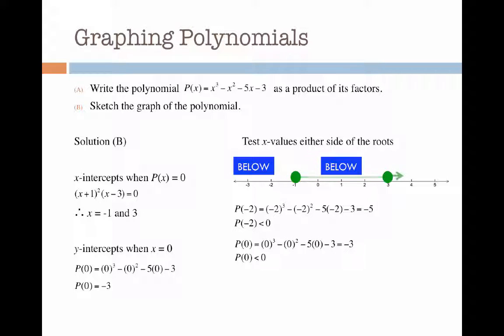Finally I'm going to test something bigger than 3 — I'm going to test p of 4. That gives me an answer of 25, which is a positive number, meaning that when x is greater than 3 the graph will be above the x-axis.